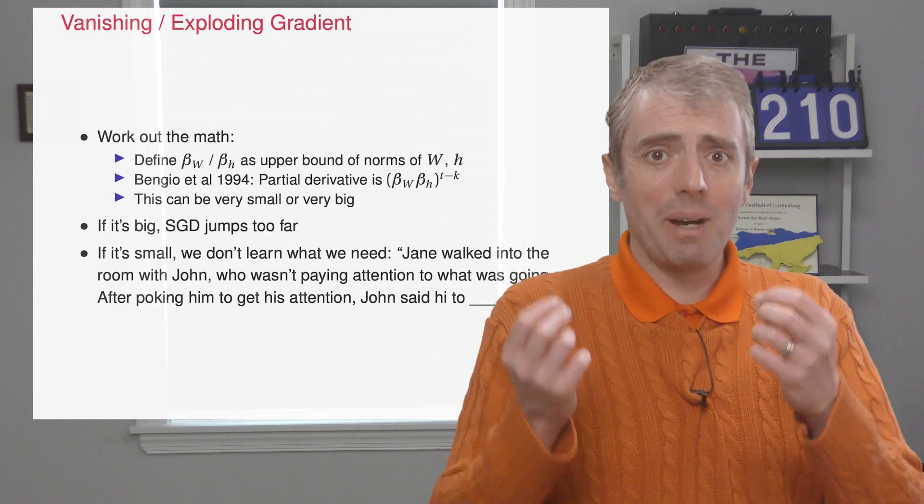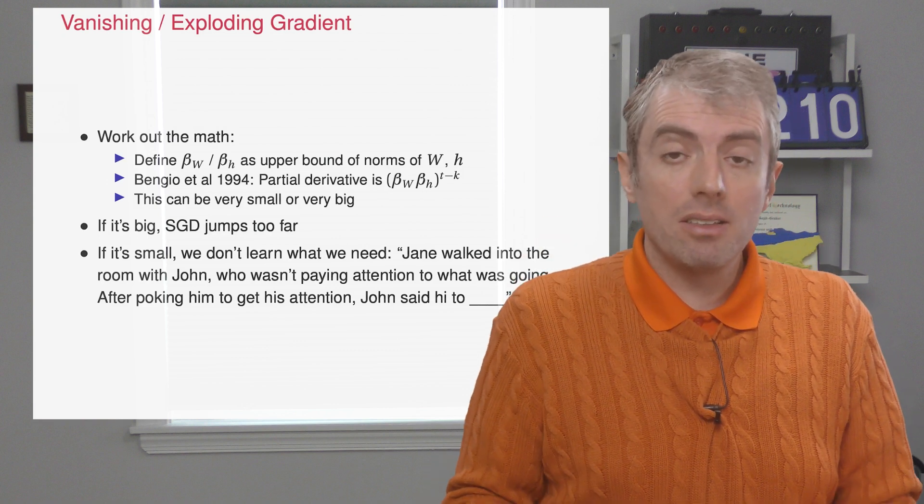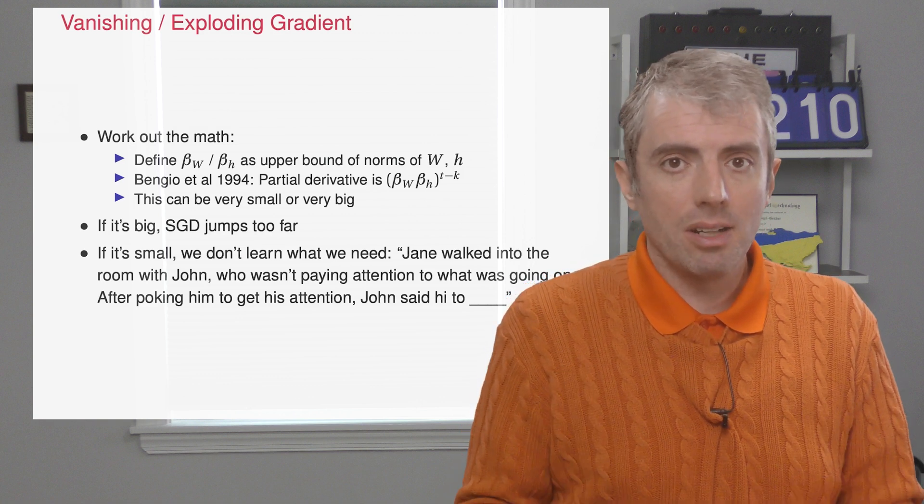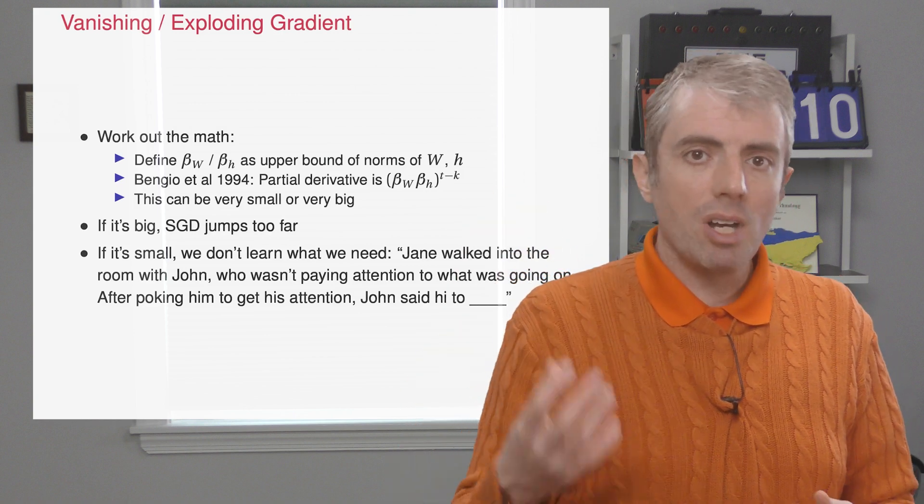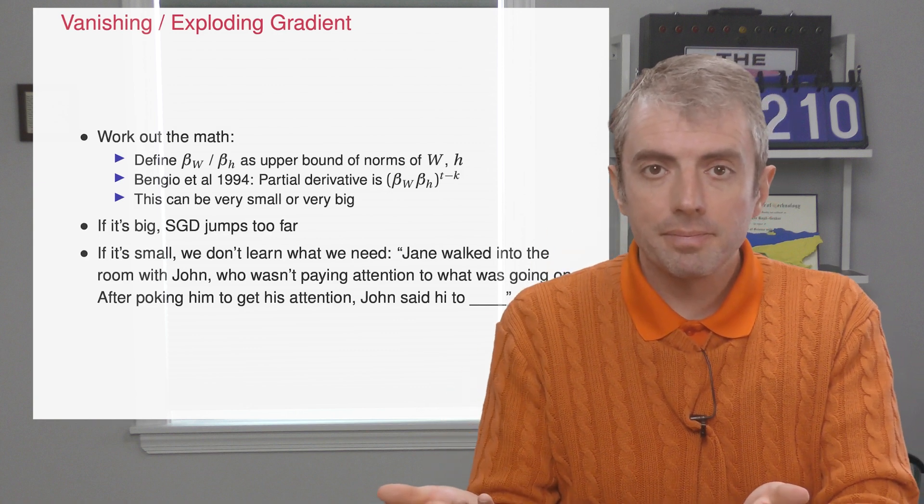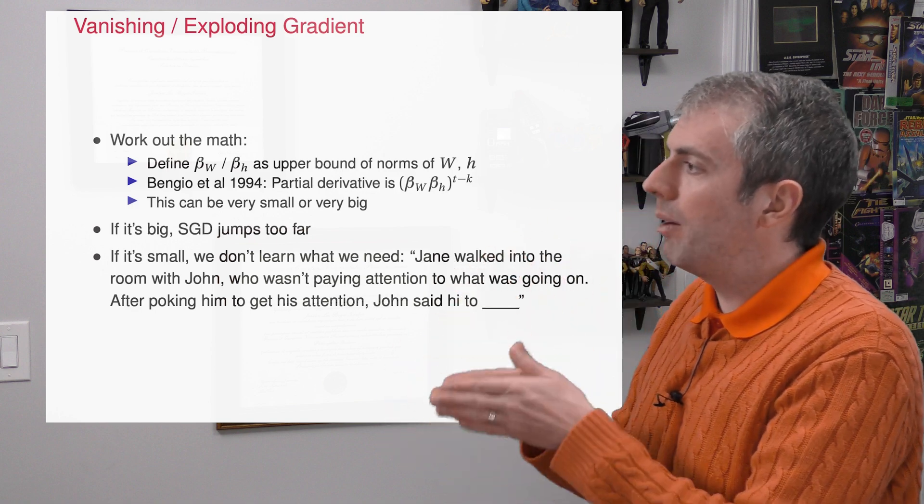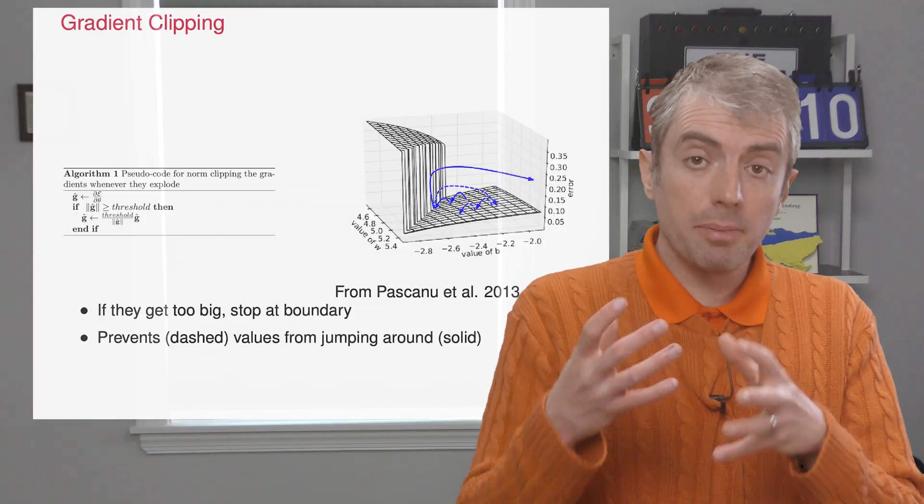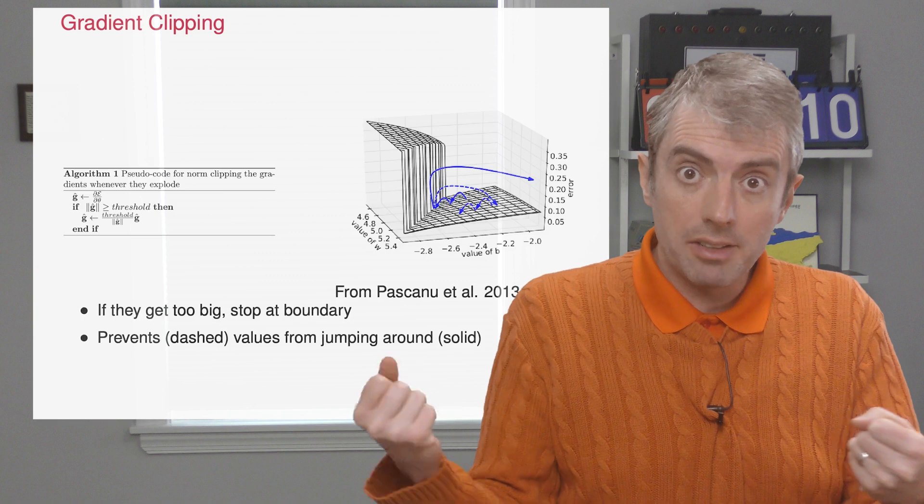But you need to have long-range dependencies for language modeling. Let's say that you have the sentence: Jane walked into the room with John, who wasn't paying attention to what was going on. After poking him to get his attention, John said hi to... For this to work, the model needs to go all the way back to Jane to give high weights to tokens like her or Jane. Okay, so how do you fix this problem so that your gradients don't get too big or too small, but you can still capture these long-range dependencies?